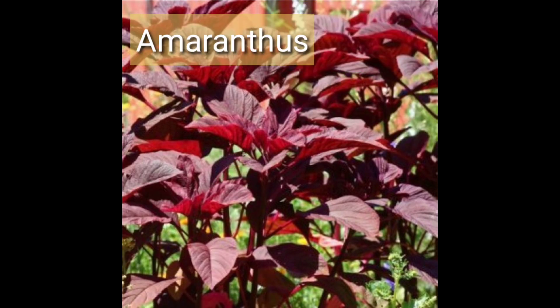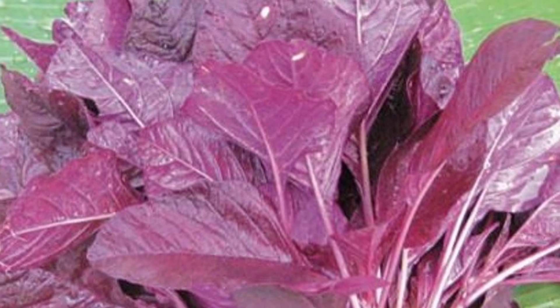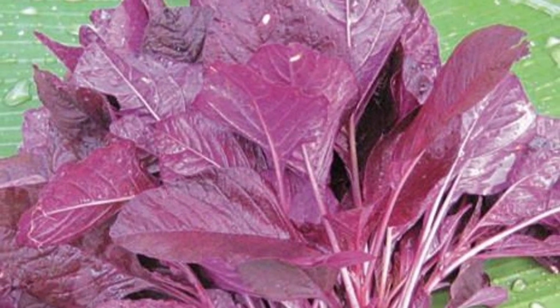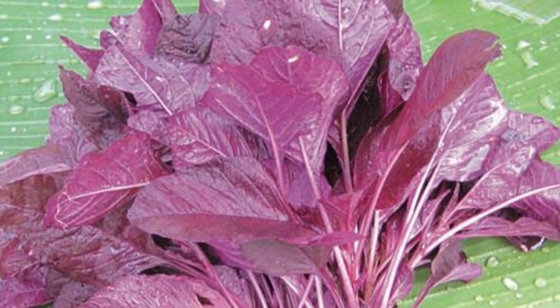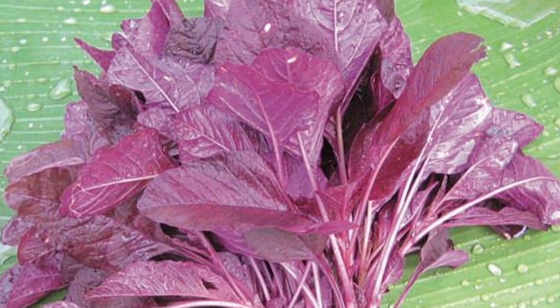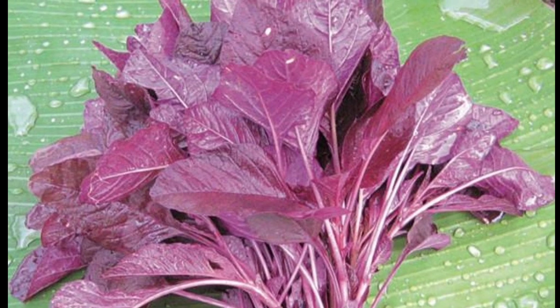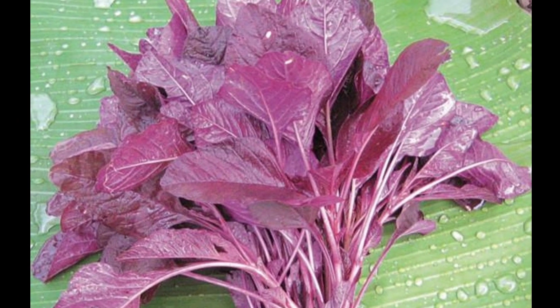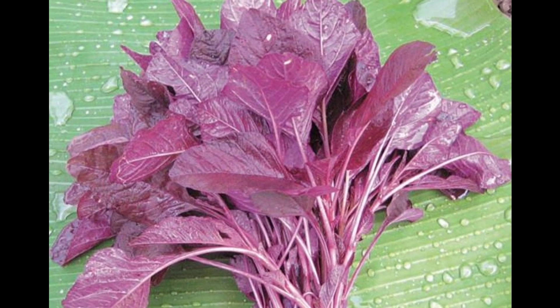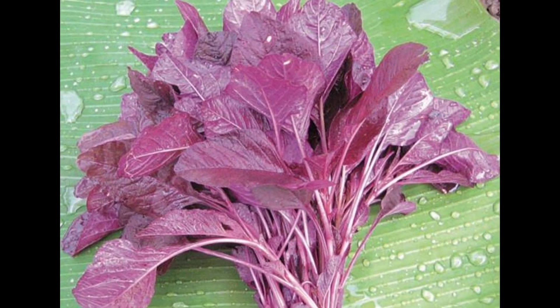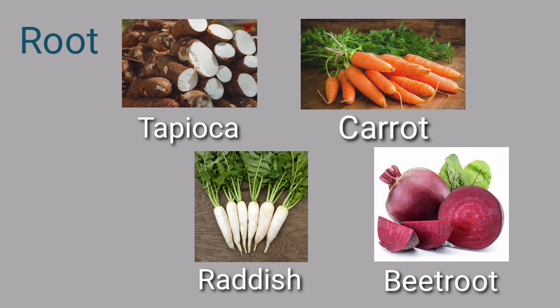Do we use only the leaf of amaranthus for our food? No, we use its stem also. We use different parts of different plants. For roots, for example: tapioca, carrot, radish, beetroot — we use the root as the edible part.